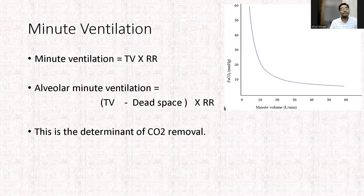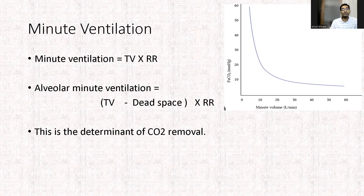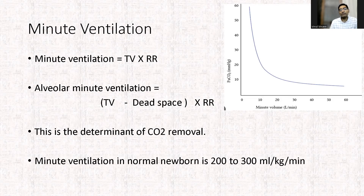When ventilating a baby with carbon dioxide retention, there are two ways to increase minute ventilation: increasing the tidal volume, or increasing the respiratory rate. Increasing the tidal volume is the better option, because with a fixed dead space, the proportional increase in alveolar minute ventilation is greater. When you increase respiratory rate, minute ventilation increases, but proportionally the dead space ventilation also increases, so the gain in alveolar minute ventilation is less. However, tidal volume cannot be increased beyond a certain limit, so respiratory rate may need to be increased at times. The normal minute ventilation in a normal newborn is around 200–300 ml.